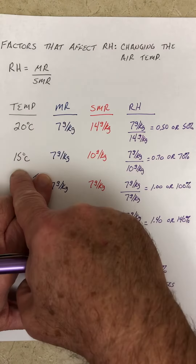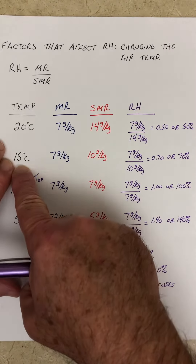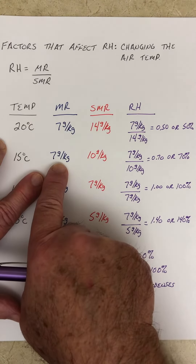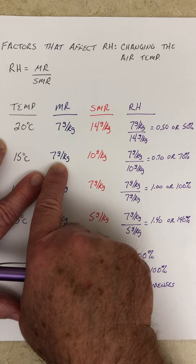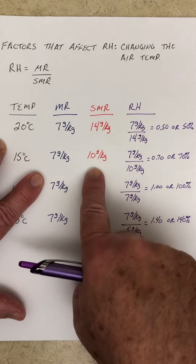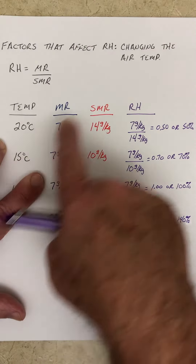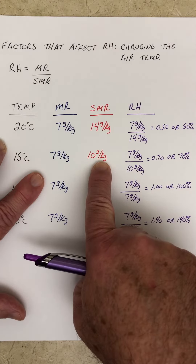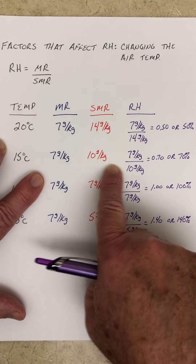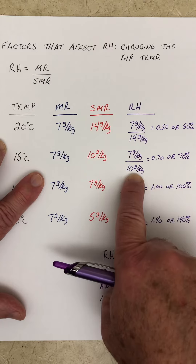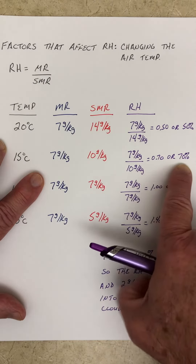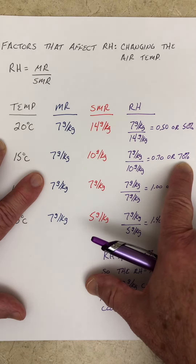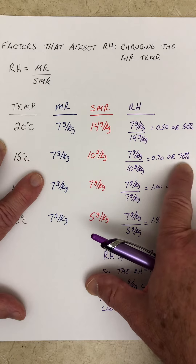If we cool the temperature down to 15 degrees C and keep the mixing ratio the same — 7 grams per kilogram — as we decrease the temperature, we decrease the saturation mixing ratio. Relative humidity is mixing ratio divided by saturation mixing ratio. At this point the relative humidity has increased to 70 percent. Is that the dew point? No, because this is 70 percent, not 100 percent.